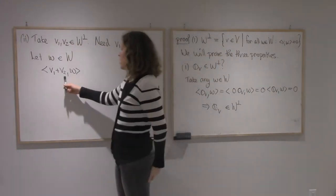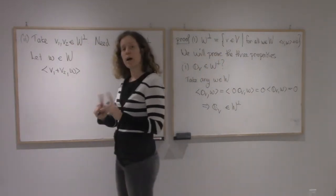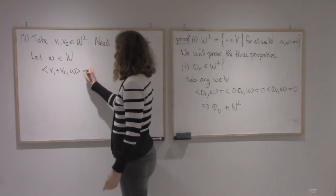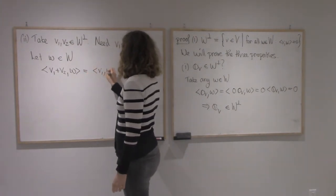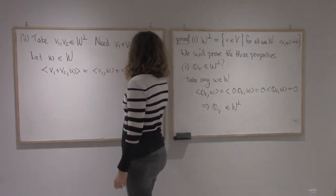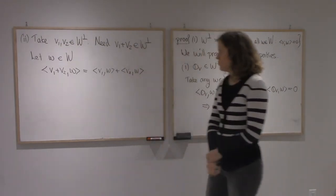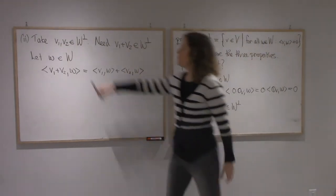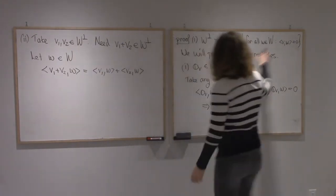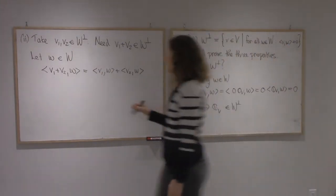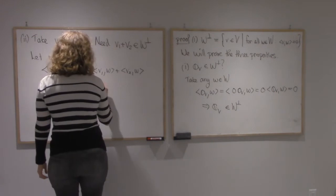Alright, so we know that in inner products we can split over sums. So I'm going to get v1 dot w plus v2 dot w. Now v1 is in W-perp, that means it's perpendicular to everything in W. So this is going to be zero.